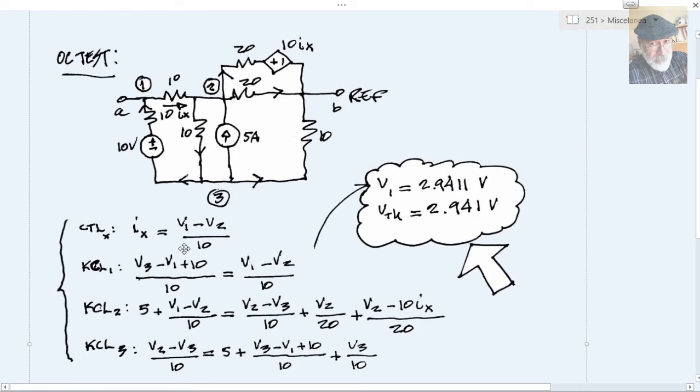There you have the four equations of the MNA, the system of equations to solve that one. We enter them in the calculator, solve for them or do them by hand. Any method you use, you find V1. V1 will be the open circuit voltage between A and B, 2.94 volts. And that is V_Thevenin, 2.94 volts. And that is the first of the answers we need in question 1.